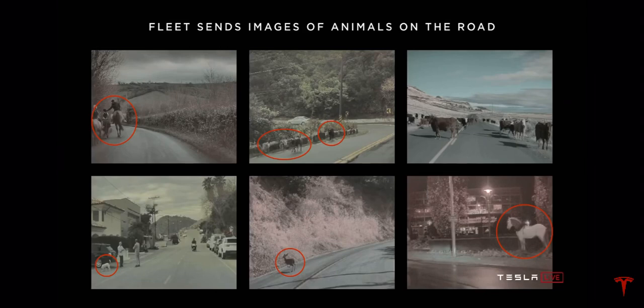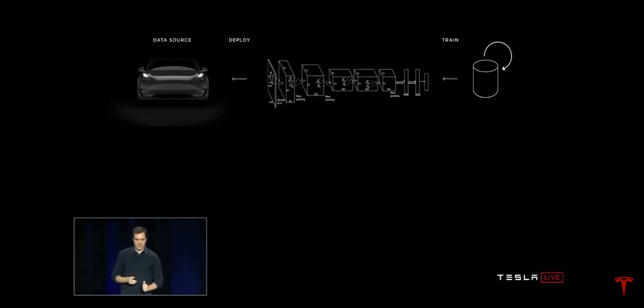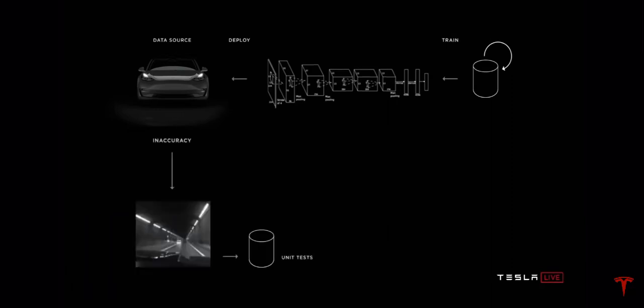To summarize, the process by which we iterate on neural network predictions looks something like this. We start with a seed dataset that was potentially sourced at random, we annotate that dataset, and then we train neural networks on it and deploy that to the car. We have mechanisms by which we notice inaccuracies when the detector may be misbehaving — for example, if we detect that the neural network might be uncertain, or if there's a driver intervention, we can create trigger infrastructure that sends us data of those inaccuracies.